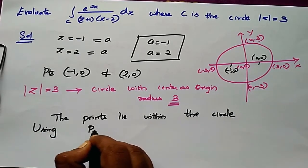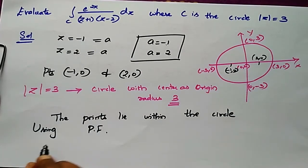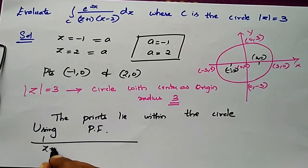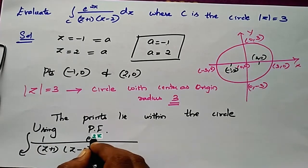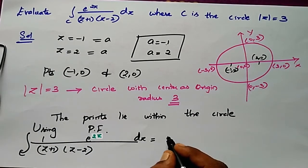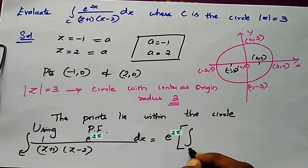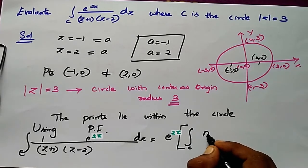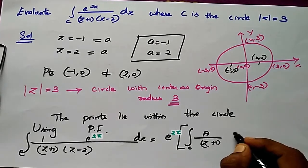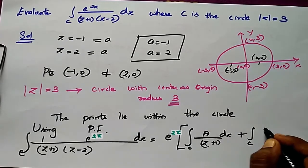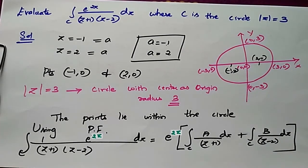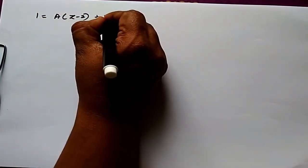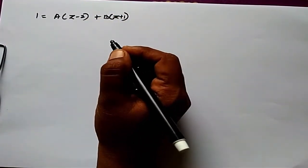Using partial fraction formula, we write 1 / ((z+1)(z-2)) = A/(z+1) + B/(z-2). So the integral becomes: integral c of A/(z+1) dz plus integral c of B/(z-2) dz. This gives 1 = A(z-2) + B(z+1).